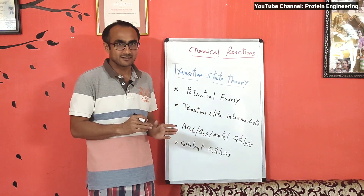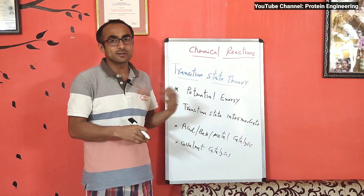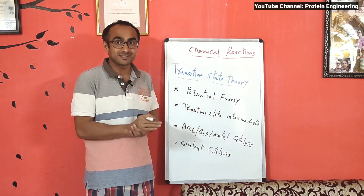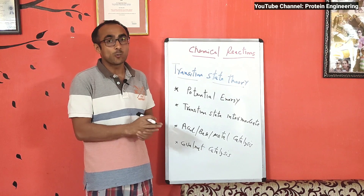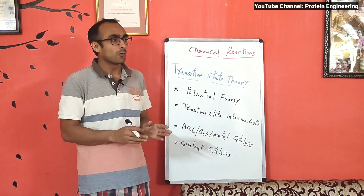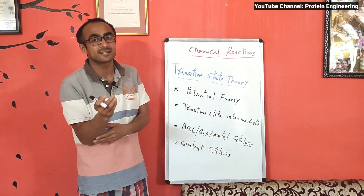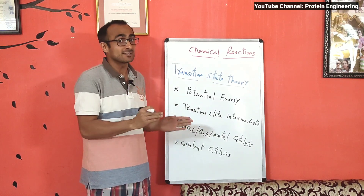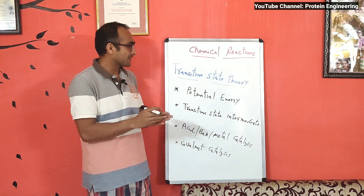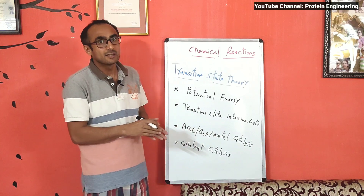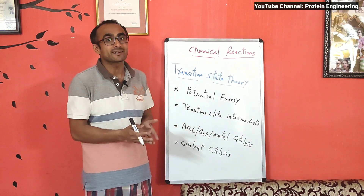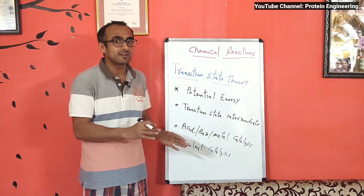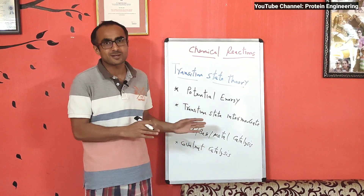In acid catalysis, stabilization of the transition state occurs by donating a proton. In base catalysis, the base takes a proton from the intermediate to stabilize it. In covalent catalysis, covalent bonds form to stabilize the intermediate. In metal ion catalysis, the metal ion forms ionic interactions with the transition state intermediate to stabilize it. After stabilization it splits into product, releasing energy, making it favorable. This is how enzymes bring down activation energy by stabilizing the transition state.